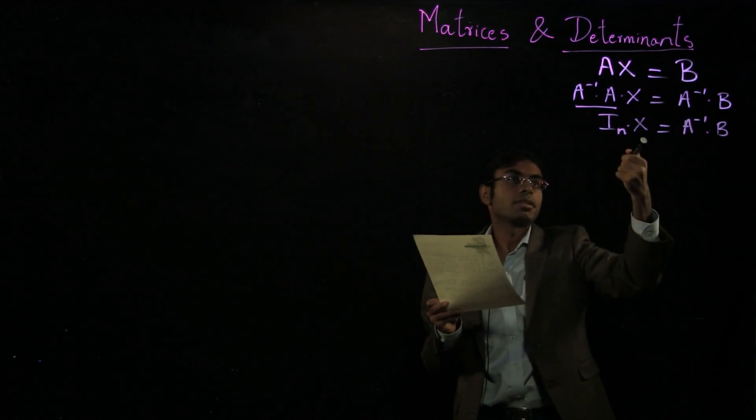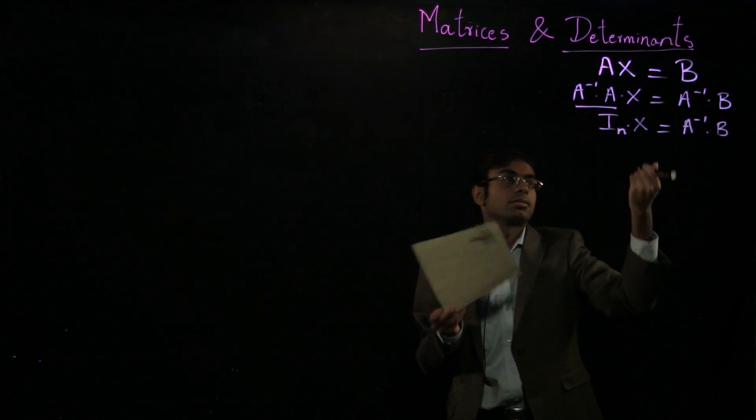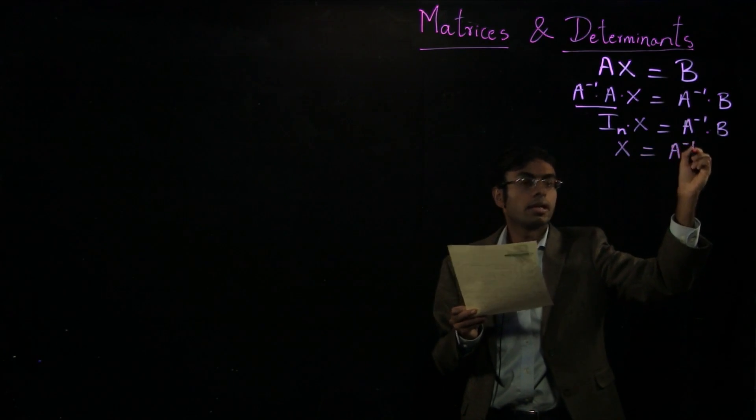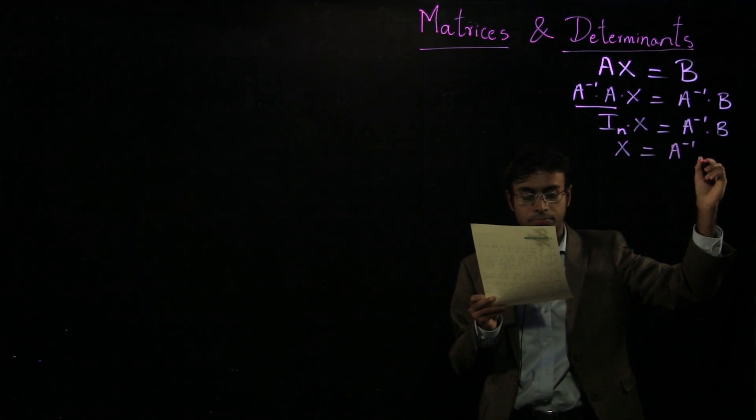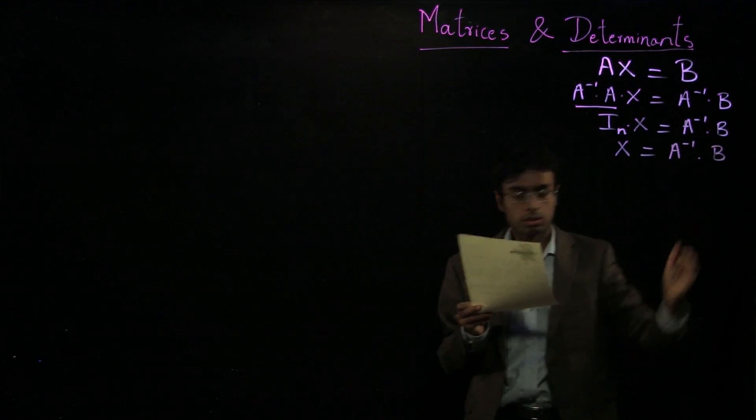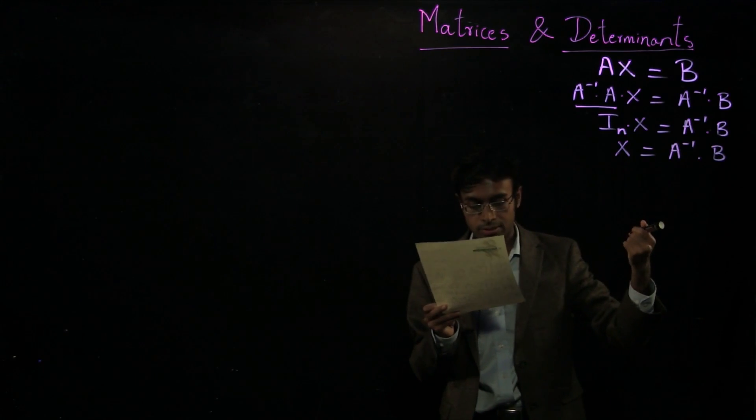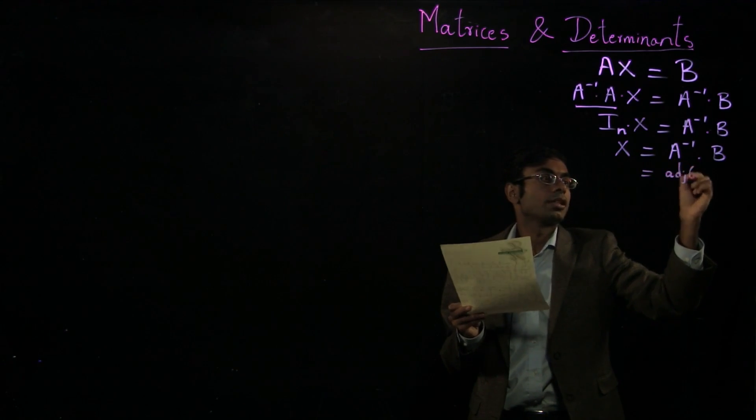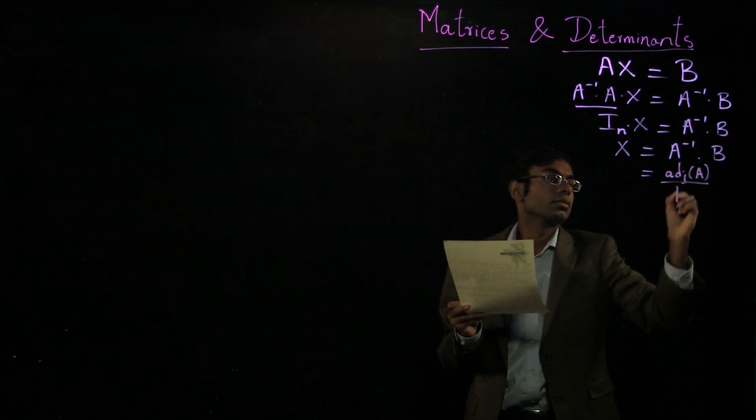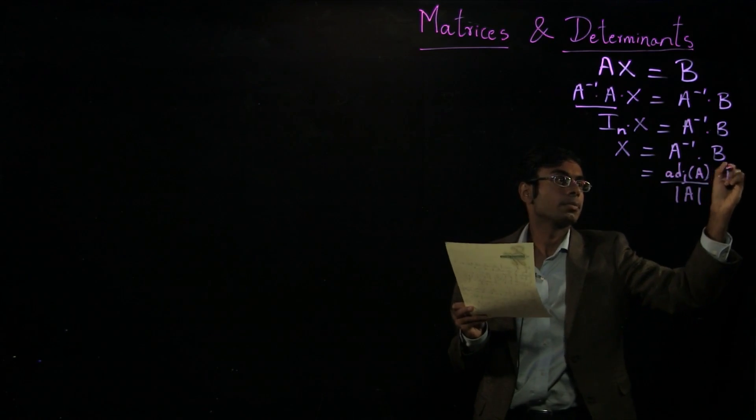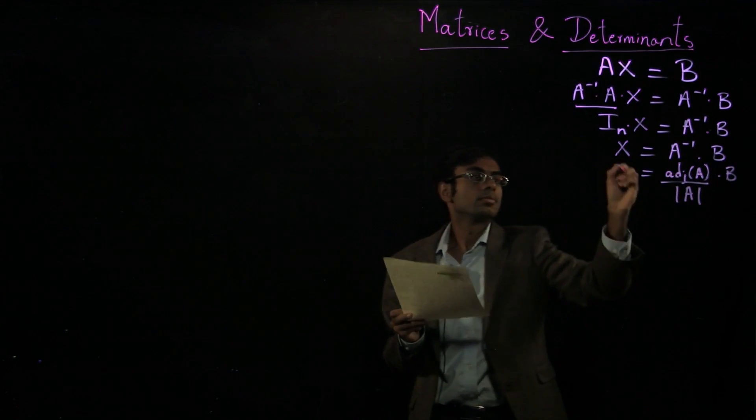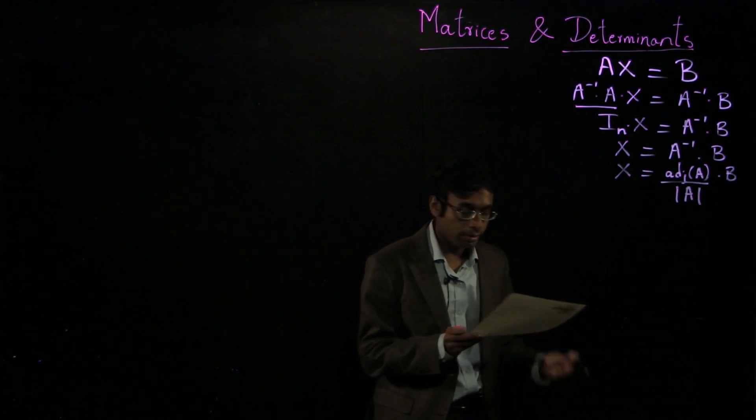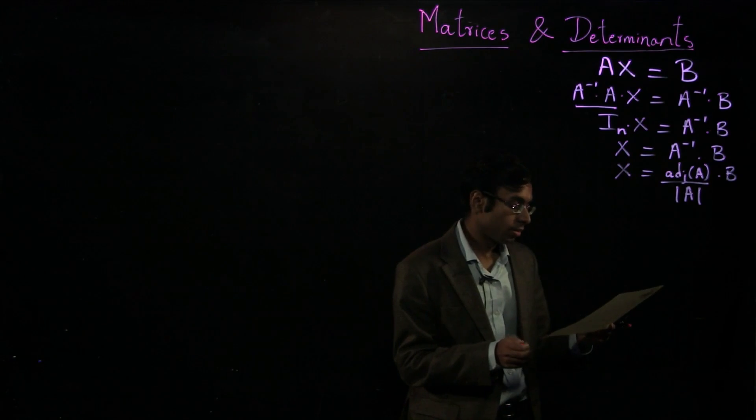And any matrix multiplied by identity is just itself. So that gives us the solution A inverse times b, provided A inverse exists. So that is adjoint of A over determinant of A times b. This is the method to find the solution of a set of linear equations in n unknowns.